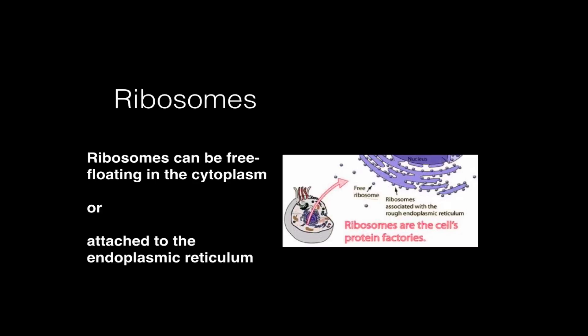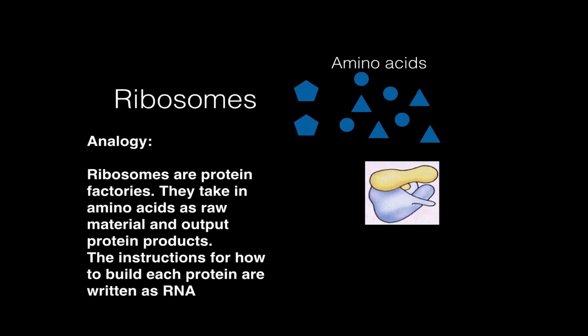Ribosomes are protein factories so we need to see how that works. If you remember proteins are built from amino acid monomers. Up here we have all these different shapes, each one represents a different amino acid - we have hexagons and circles and triangles, so three different kinds of amino acids.